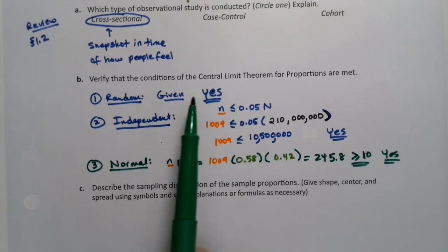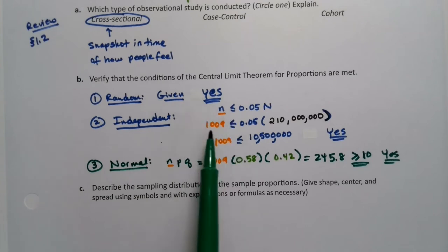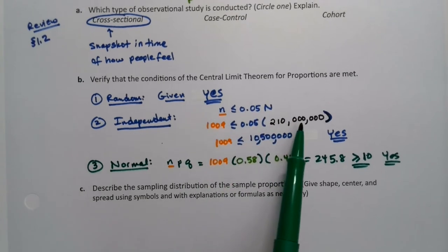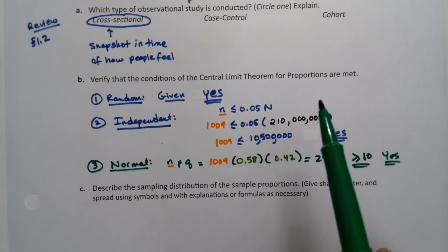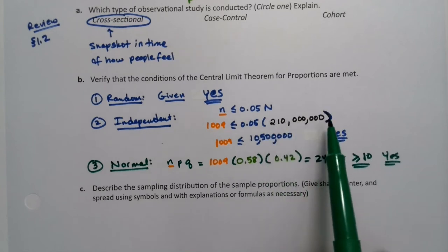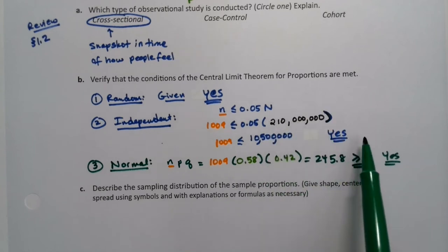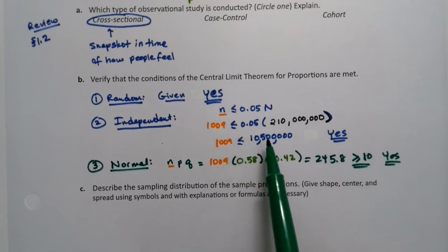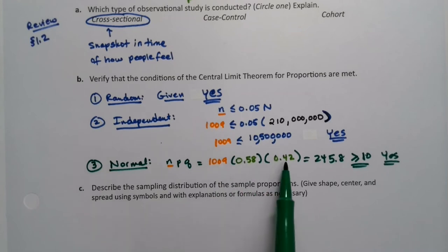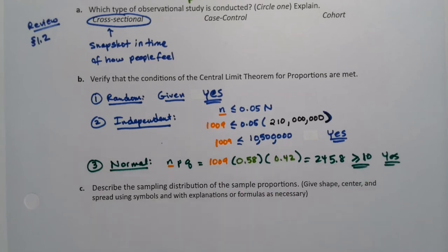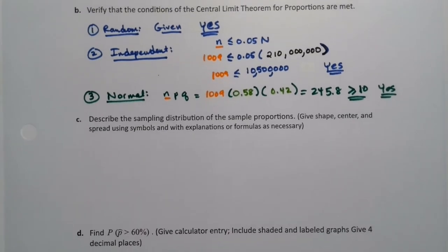All right. Three conditions. Random is always easy. It's always given or just safe to assume. Independent takes some work. If you're given the numerical value for the population size, you actually have to use it and find what that is and do it. If you're not given it, you would write all adult Americans in here and just say yes, of course, because this is a huge number. And then normal is also some work. You have to do n times p times q and find what that number is and cross your fingers that it's bigger than 10, which it very much was in this case.